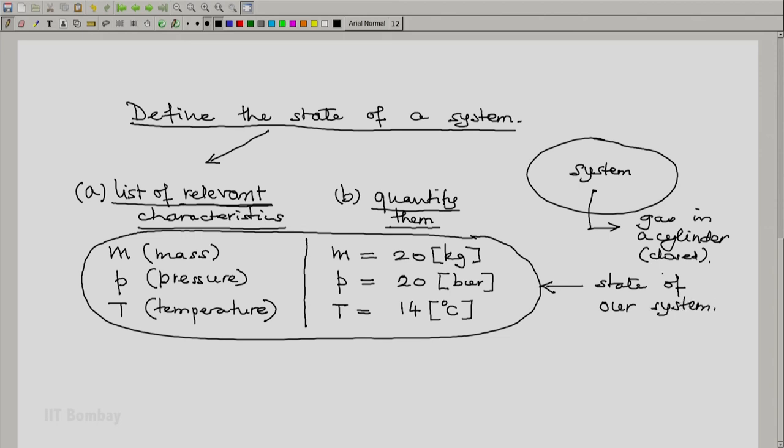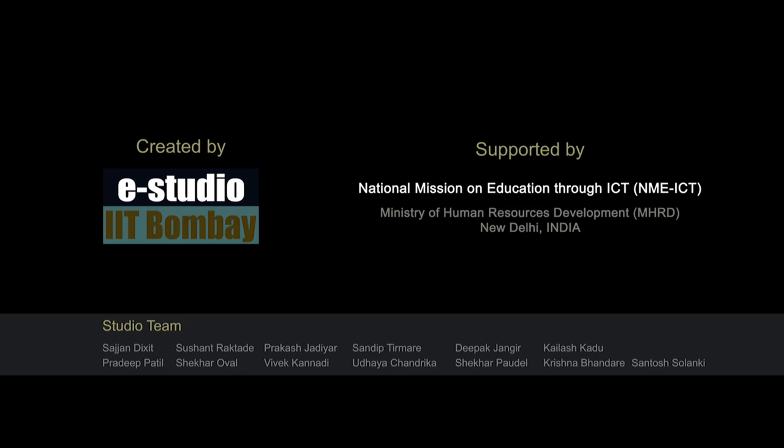And our system is this gas in the cylinder, mass 20 kg, pressure 20 bar, temperature 14 degrees C. So, we can say our system is gas, symbolism could be like this, mass 20 kg, pressure 20 bar, temperature 14 degrees C.